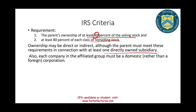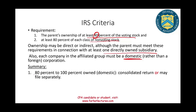Also, each company in the group has to be a domestic rather than a foreign corporation. So when you're consolidating another corporation, the corporation has to be a domestic U.S. corporation, to be more specific. To summarize: if you own between 80 to 100% and the corporation is domestic, you have two options — you can consolidate, or the subsidiaries can file their own tax return.